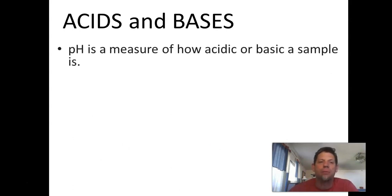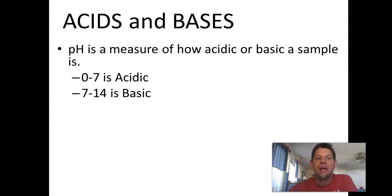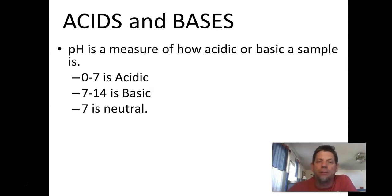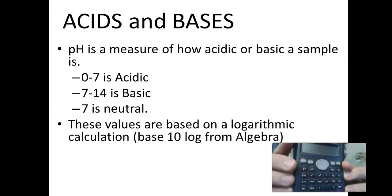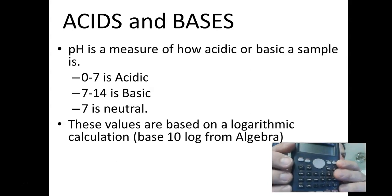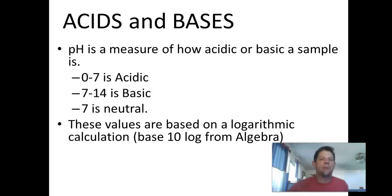Now we need to look at how to come up with pH. pH again measures whether something is acidic or basic. If the pH is from zero to seven we call it an acid; from seven to fourteen it is a base; and if the pH is seven it's neutral. This is a logarithmic function — logs you may have learned a little bit about in algebra. These values are based on a base-10 logarithmic calculation. On your calculator you have a button called LOG — not LN, that's natural log — LOG is the base-10 log, and that's the button we're looking for.